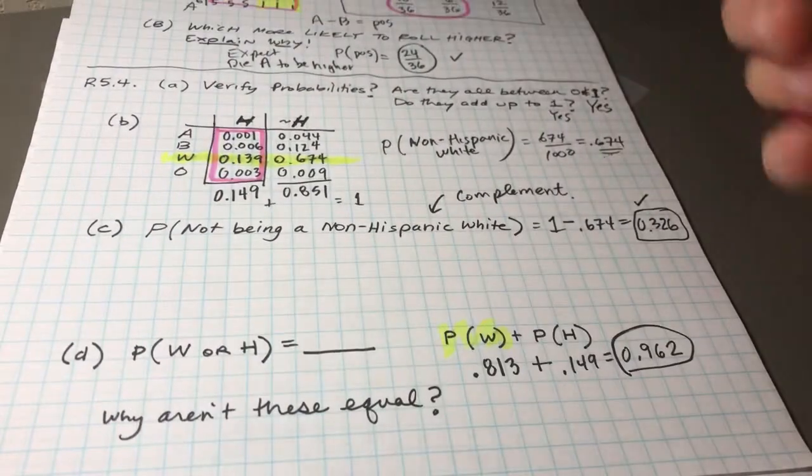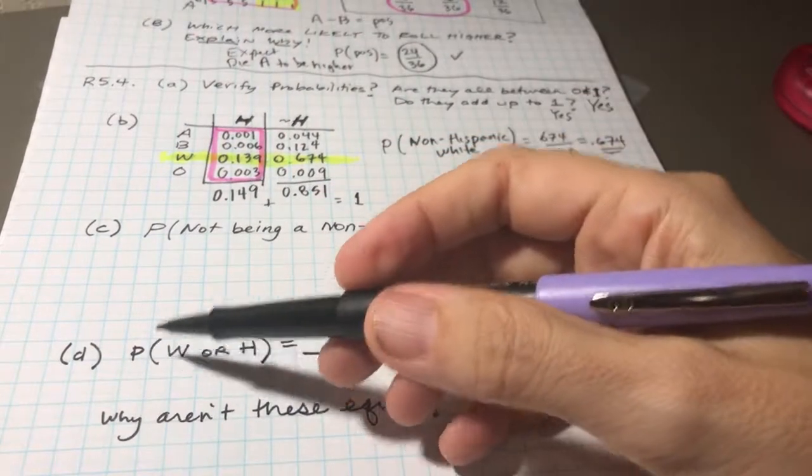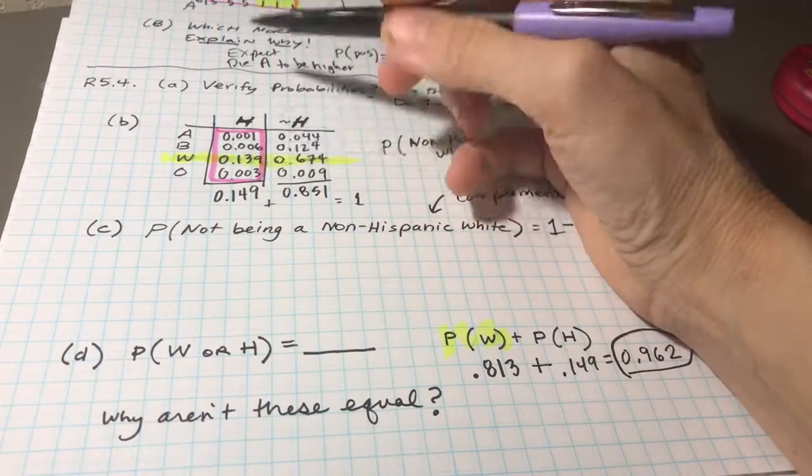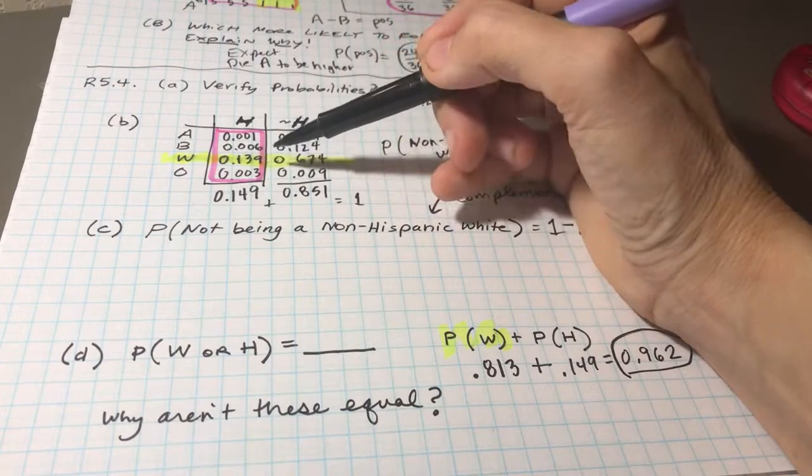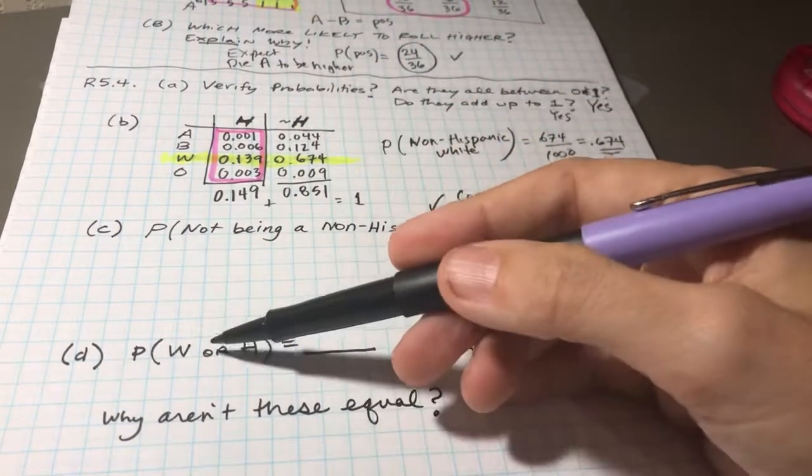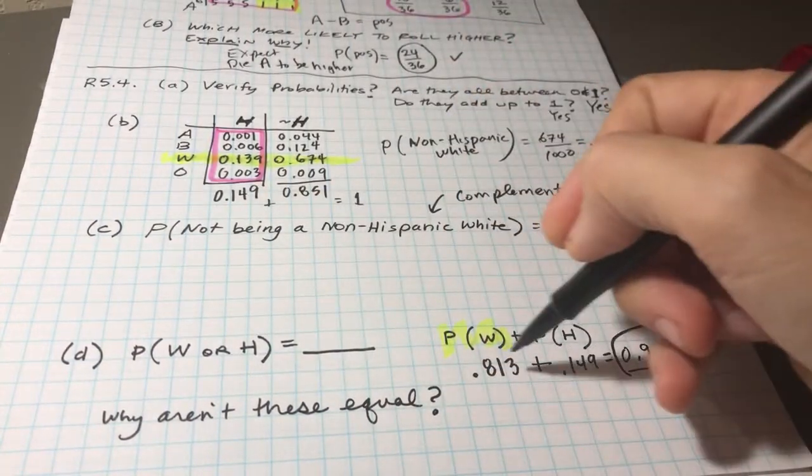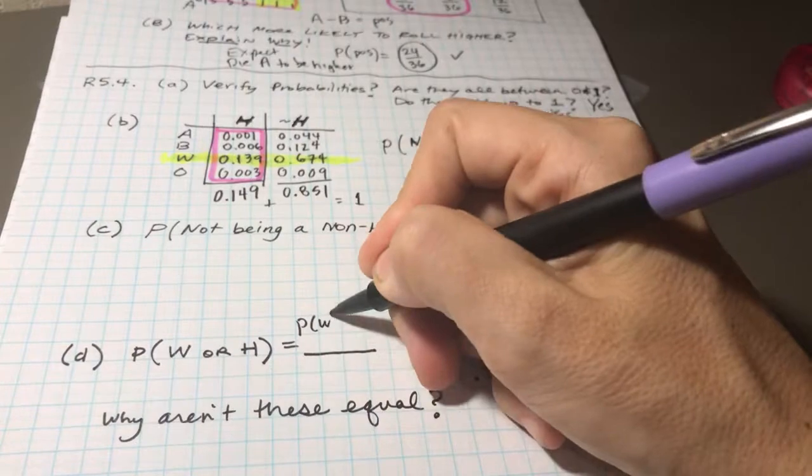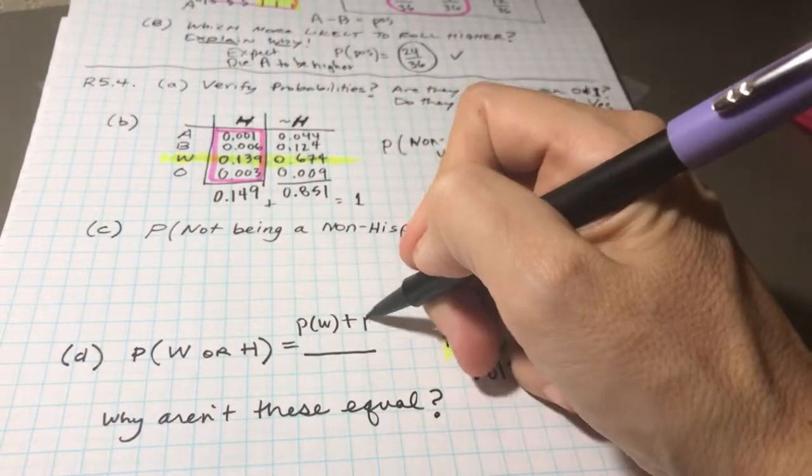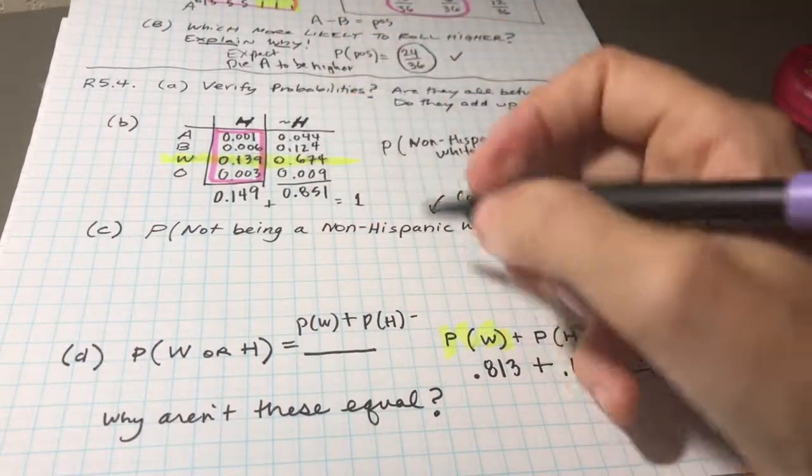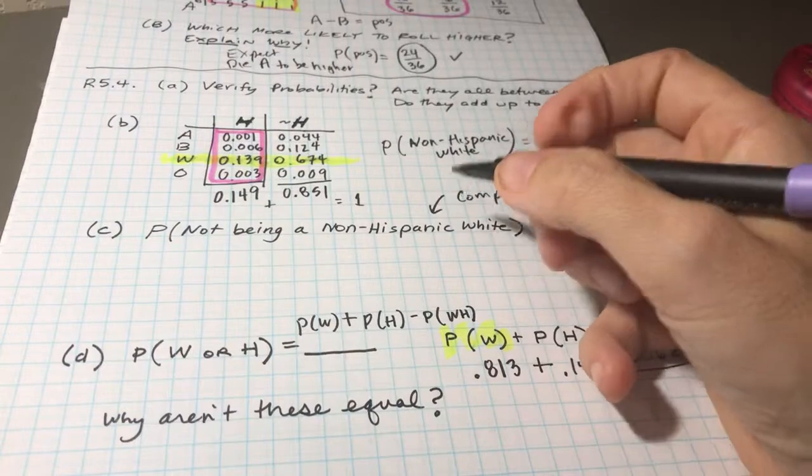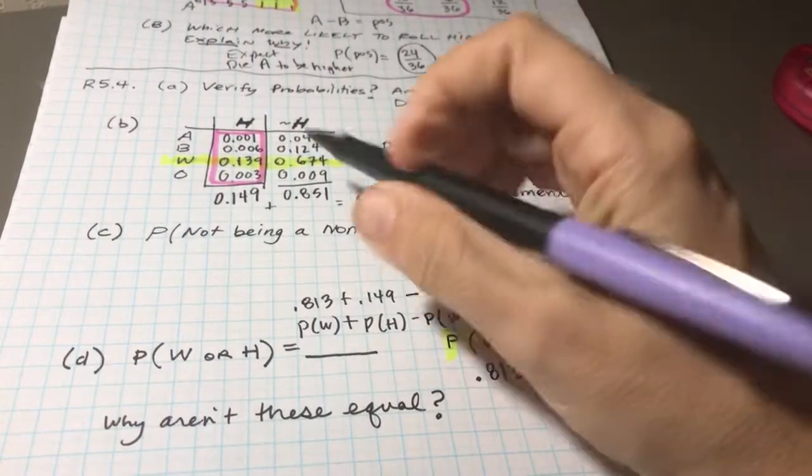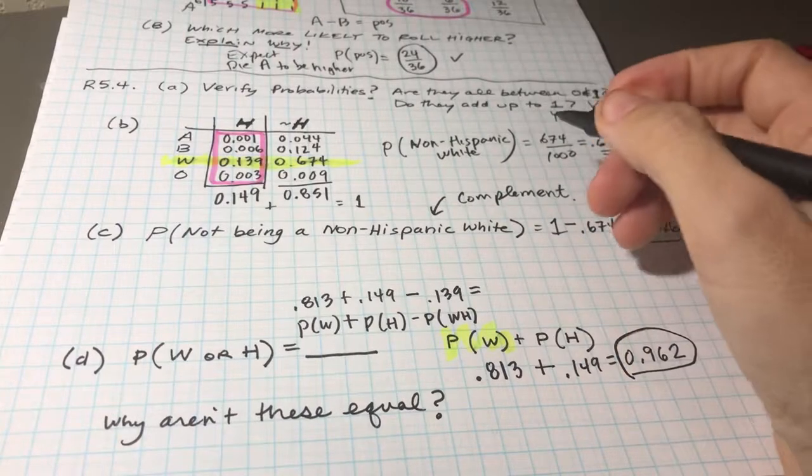So the challenge here is mathematically it sounds like this is what they want. But if I classify white or Hispanic, then I'm including anybody here in pink and I'm including anyone here in yellow, and I accidentally counted these people, 139 people out of a thousand, twice. And so I believe what they're looking for here is actually the probability of white or Hispanic would be the probability of white plus the probability Hispanic, but I need to subtract those that are both white and Hispanic.